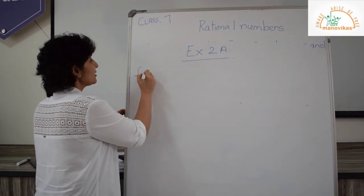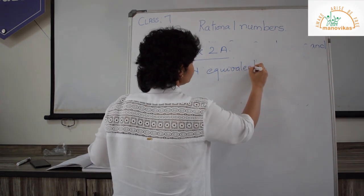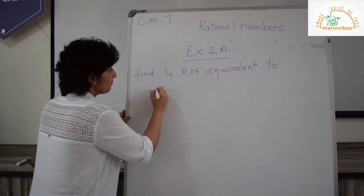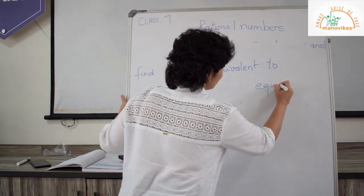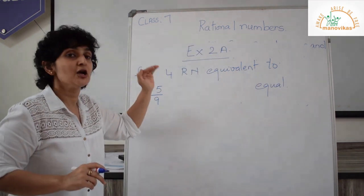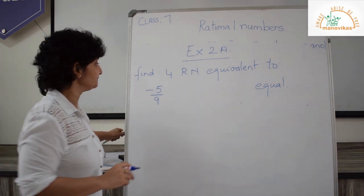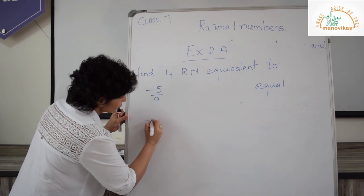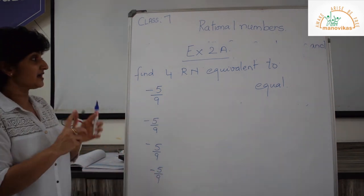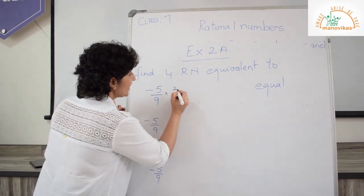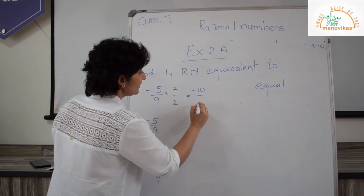For example, find 4 rational numbers equivalent to minus 5 upon 9. Equivalent means equal. When it is equal, I need to multiply and divide with the same number in both the numerator and the denominator. I am asked for 4 rational numbers. So multiplying by 2, I get minus 10 upon 18.